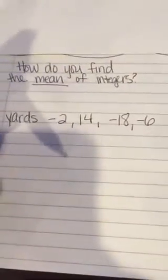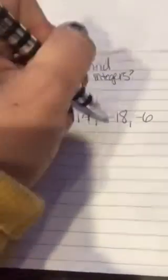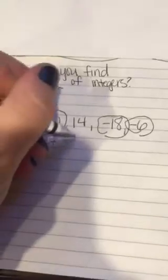I would first add them up by putting all of the negatives together. So we have negative 2, we have negative 18, that becomes negative 20, and then we have another negative 6. So if we add the negative 6, then that becomes negative 26.